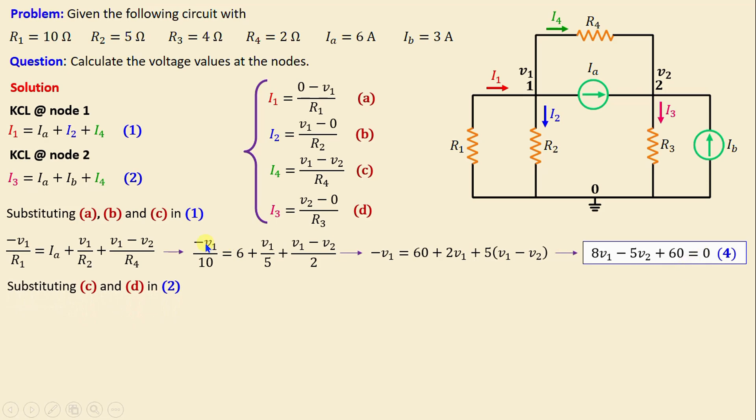Now by substituting (c) and (d) in equation (2), we can write: V2/R3 = Ia + Ib + (V1 - V2)/R4. By replacing the resistors and the current with their numerical values, we obtain: V2/4 = 9 + (V1 - V2)/2. If we combine all terms and simplify this equation, we obtain: -3V2 + 2V1 + 36 = 0.